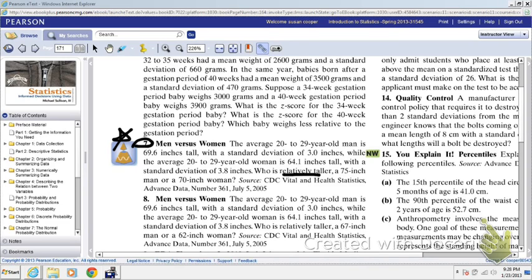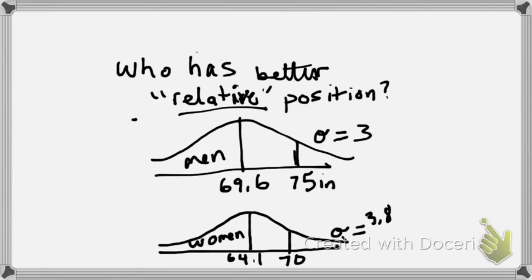Now you say to yourself, well, that depends. How far above the mean on the normal distribution is that man and how far above the mean on the normal curve is that woman with regard to each separate distribution? So let's draw this and let's actually take a look. I'm going to bring up the whiteboard.